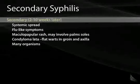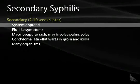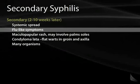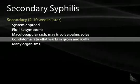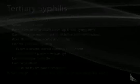Secondary syphilis occurs 2 to 10 weeks later and indicates systemic spread of the spirochete, with malaise and flu-like symptoms. Characteristically, you'll get a maculopapular rash that can involve the palms and soles — syphilis is the number one cause of a palms-and-soles rash. You can also get condylomata lata, which are flat warts in the groin and axilla, and many organisms circulating throughout the body.